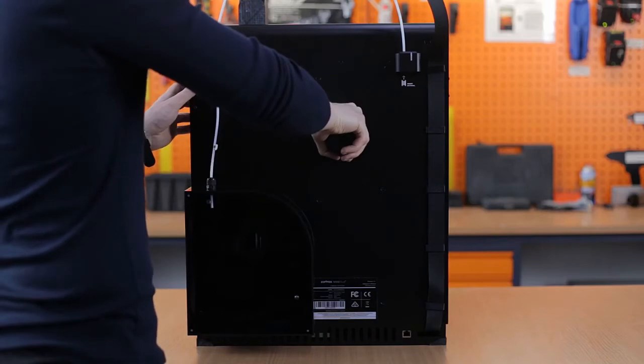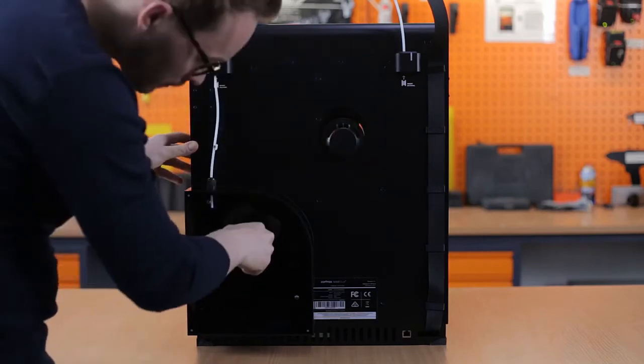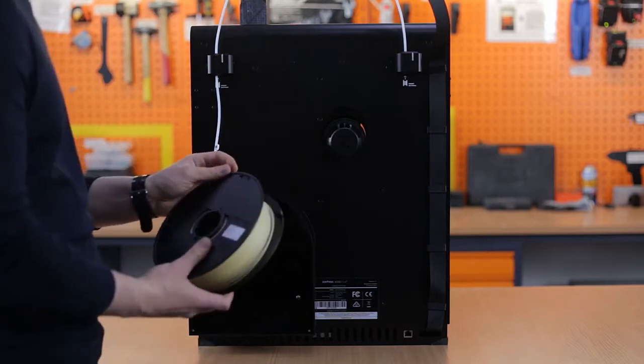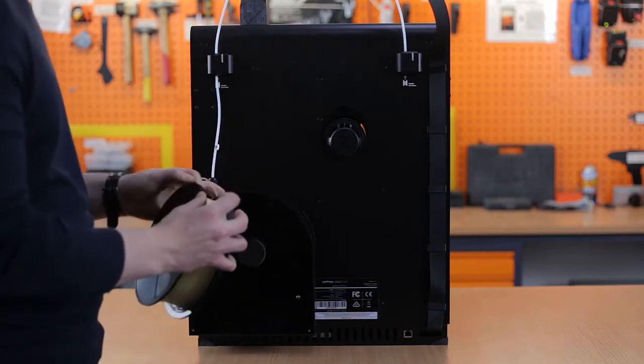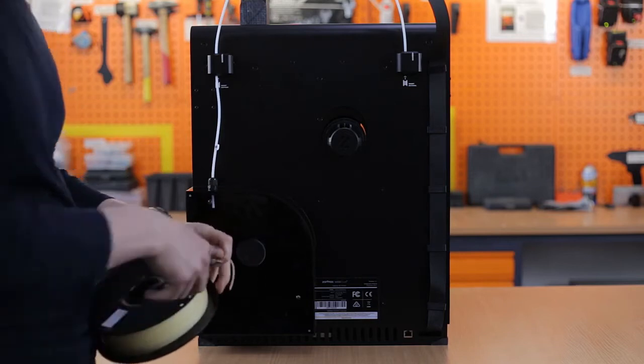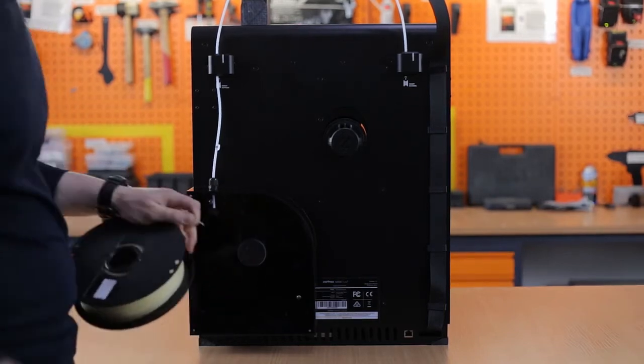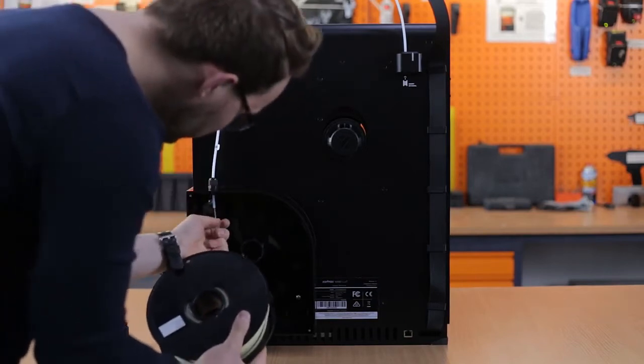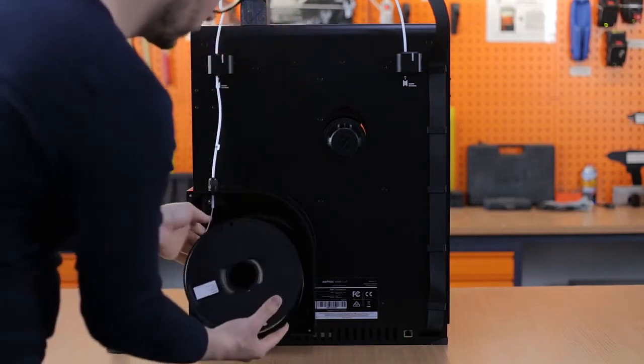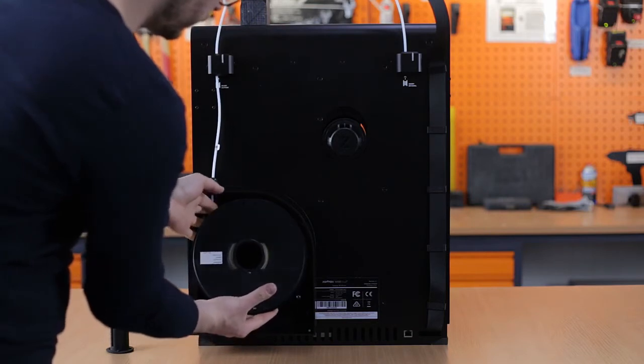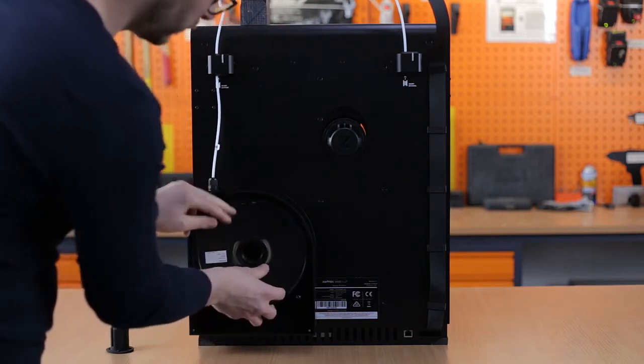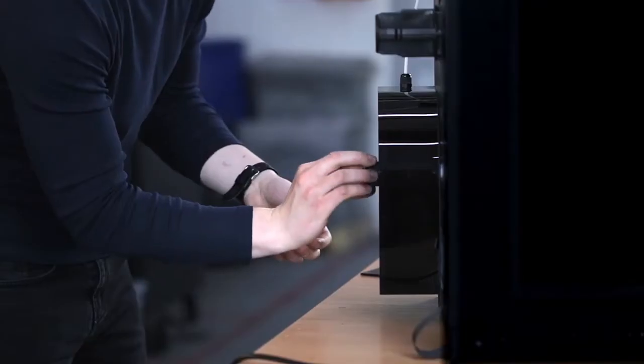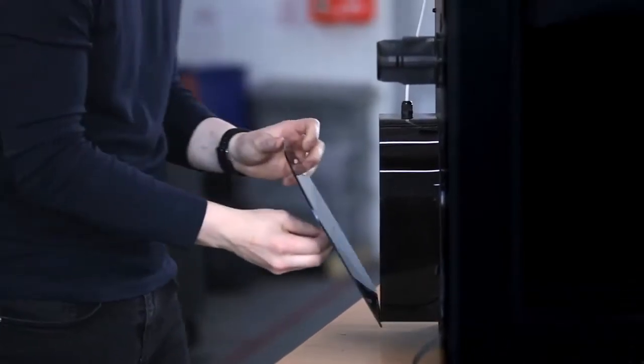Attach the two spool holders at the back of the printer. Take the spool of support material, cut off the tip of the material for easier insertion, and place the spool on the holder inside the material box. Cover the box once you're done.